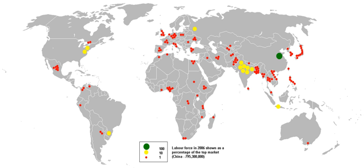This classification categorized India's unorganized labor force by occupation, nature of employment, specially distressed categories and service categories. The unorganized occupational groups include small and marginal farmers, landless agricultural laborers, sharecroppers, fishermen, those engaged in animal husbandry, beady rolling, labeling and packing, building and construction workers, leather workers, weavers, artisans, salt workers, workers in brick kilns and stone quarries, workers in saw mills, and workers in oil mills.